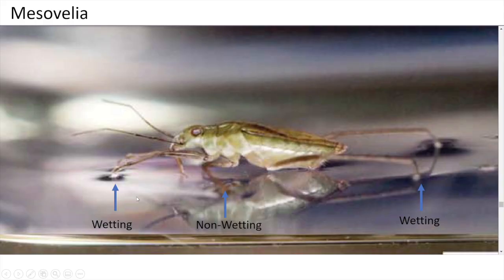The water treaders are insects such as the mesovelia, which can walk on water. It has three pairs of legs, the middle ones being non-wetting and the outer two pairs being wetting.